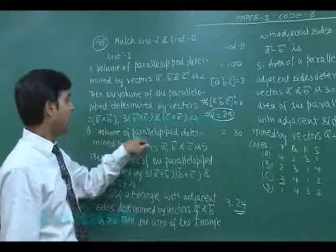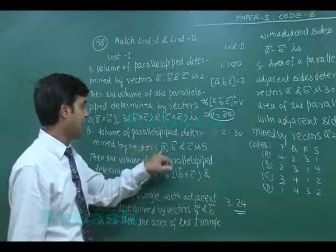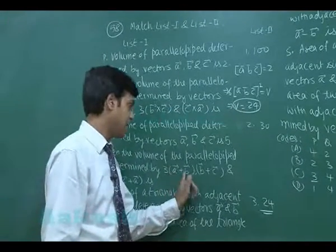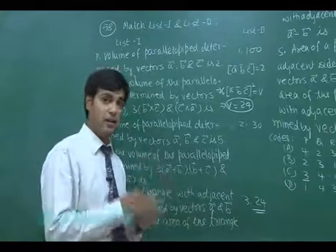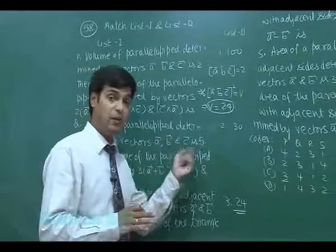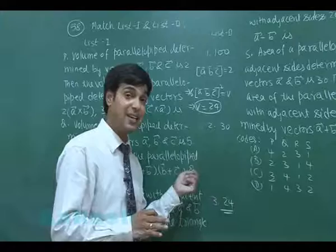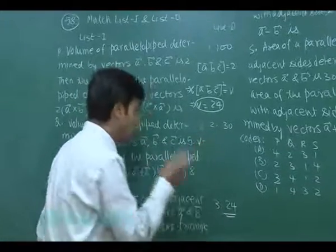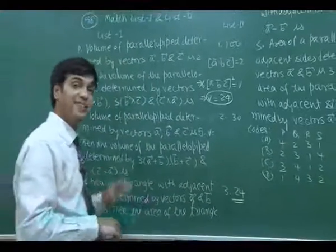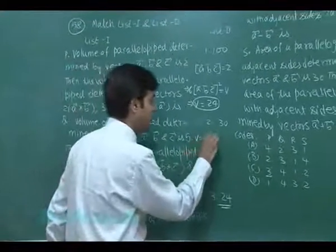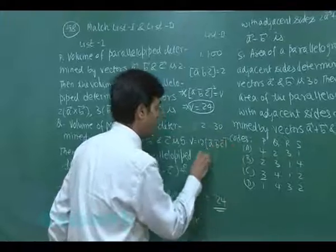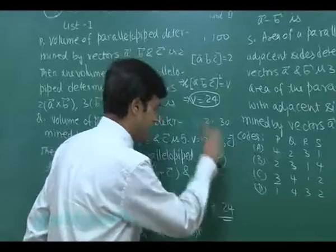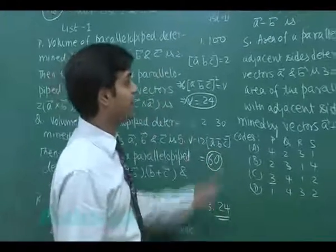Second: the volume of the parallelepiped determined by vectors a, b, c is five. For the volume with 3(a+b), b+c, 2(c+a), we know that [a+b, b+c, c+a] equals twice [a b c]. So the required volume is 2 × 3 × 2 = 12 times [a b c], where [a b c] = 5, giving us 60. So Q matches to 4 (sixty).